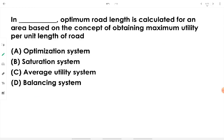Question five: optimum road length is calculated for an area based on the concept of obtaining maximum utility per unit length of road. The saturation system is the one that takes care of optimum length — traffic and vehicles reach a saturation point on the system, allowing retrieval of data on how to put the road to maximum use.